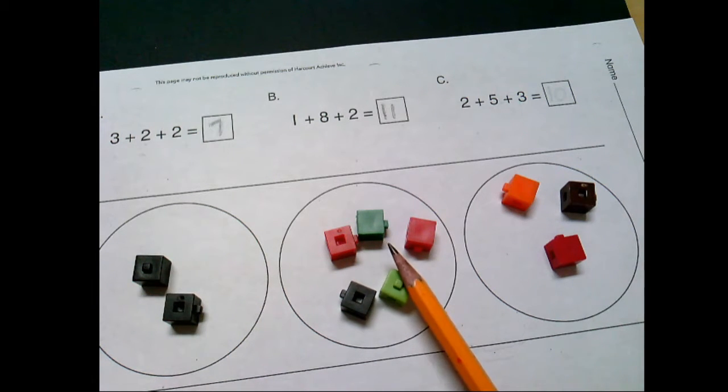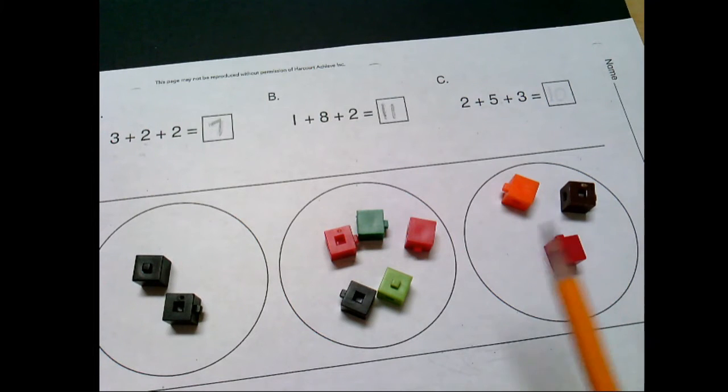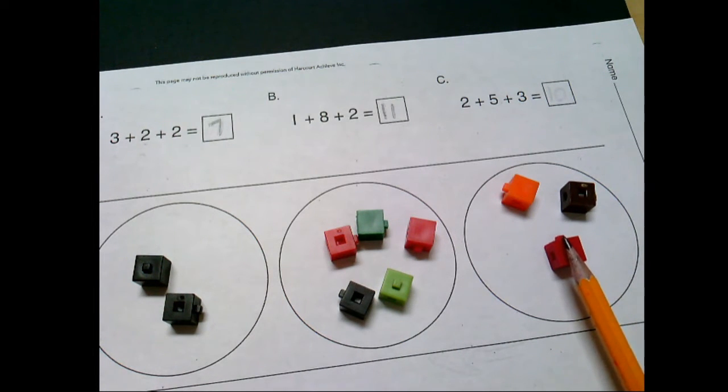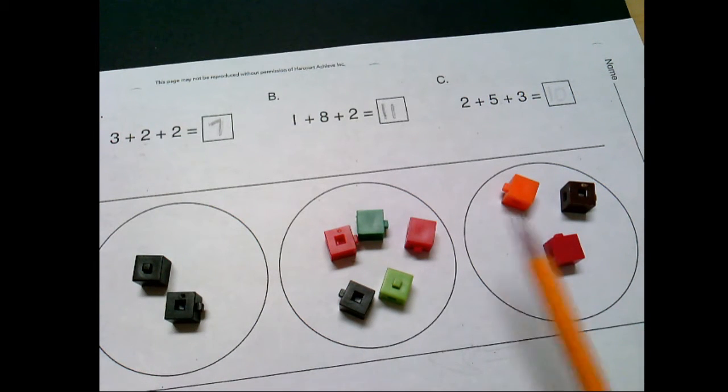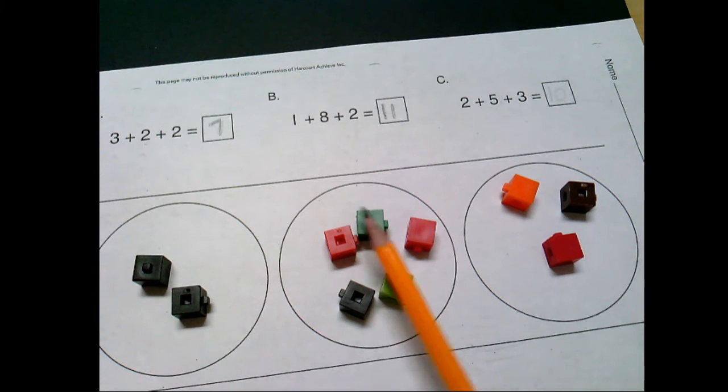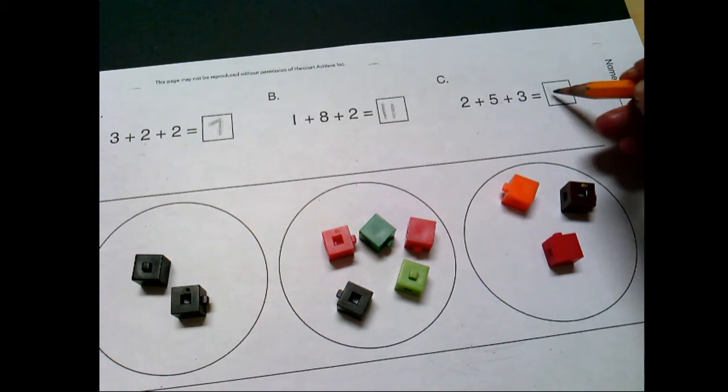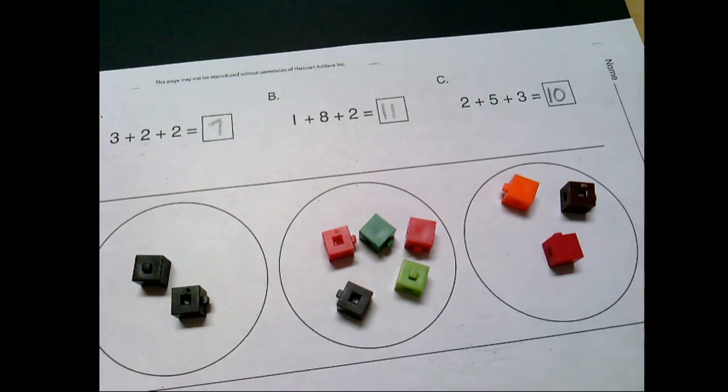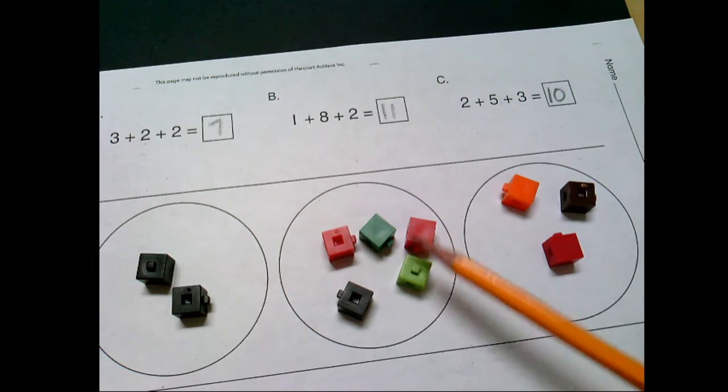We can do it in order. Two plus five is seven. Seven plus three is 10. We could start with the biggest. Five plus three is eight. And we know from our last problem, eight plus two is 10. You could also think, hmm, I know three plus two gives me five, and five plus five gives me 10. There you go. Lots of different ways that we could add them, and they all come up to the same thing. They all come up to 10. Could you check it by counting? One, two, three, four, five, six, seven, eight, nine, 10. You sure could.